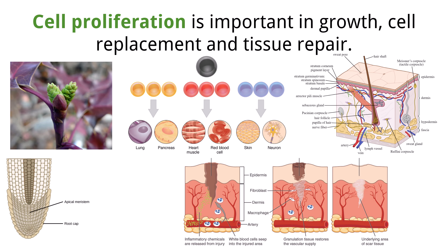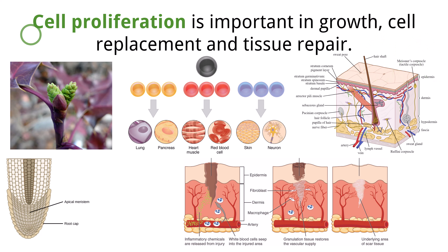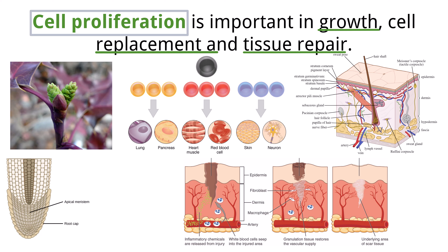Plants and animals both grow from a single cell to many cells, and this growth is due to cells dividing repeatedly. This is proliferation, an increase in the number of cells due to cell growth and division. Cell proliferation is necessary for growth, repairing damaged tissue, and replacing cells that have died.